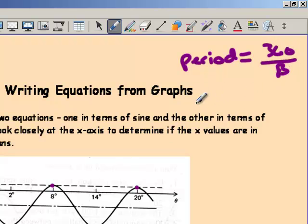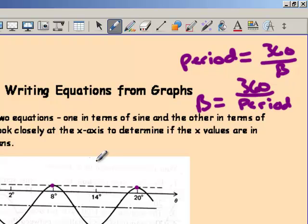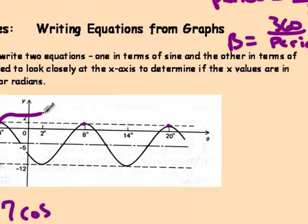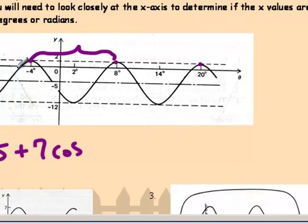However, we want to figure out what the b is. So our b is 360 divided by period. So now our period is from peak to peak. So let's see what that is. How far is it from negative 4 to 8? Well, that's a period of 12.